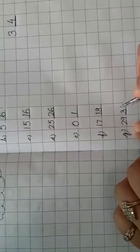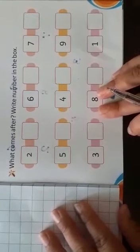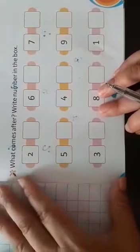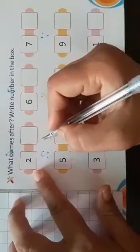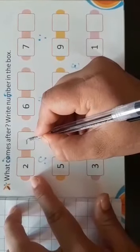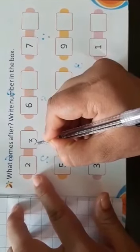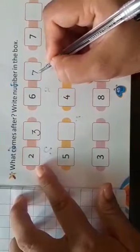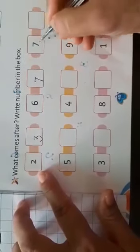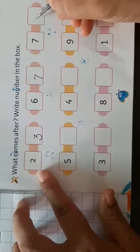Just have a look to this worksheet. What is written here? Say 2, what will come after 2? You have to touch the line properly in the box. Yes, 3. Then next one is 6, what comes after 6? 7. What comes after 7? 8.